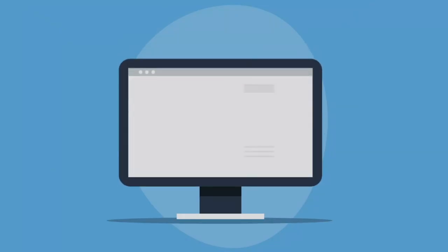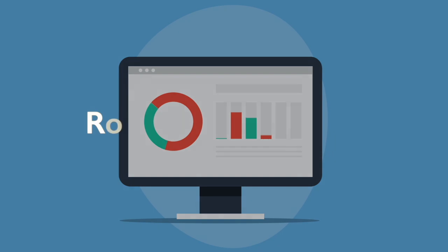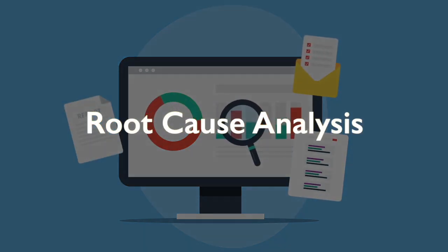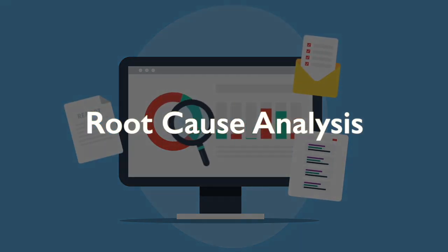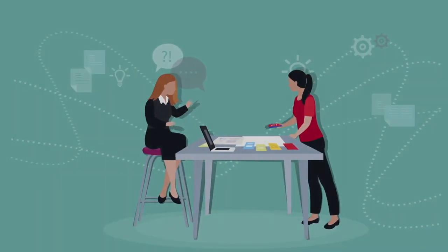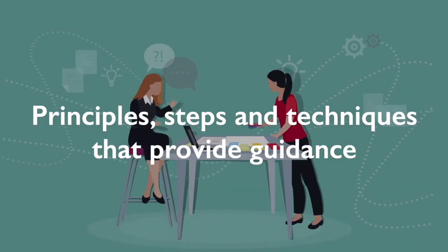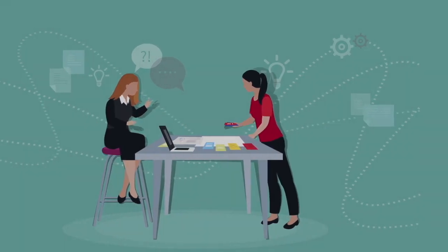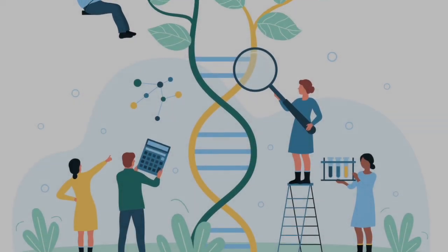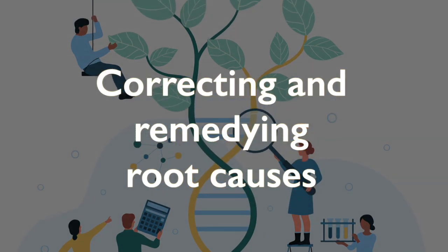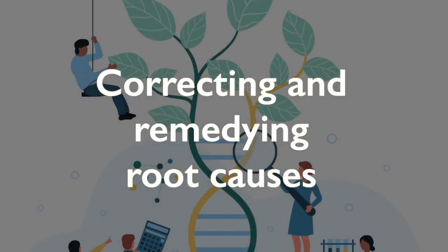In an effort to support continuous improvement, organizations often employ root cause analysis as a method to identify and find underlying causes of process problems to prevent them from occurring in the future. There are principles, steps, and techniques that provide guidance. Core principles inform effective root cause analysis, such as focusing on correcting and remedying root causes rather than just treating symptoms.